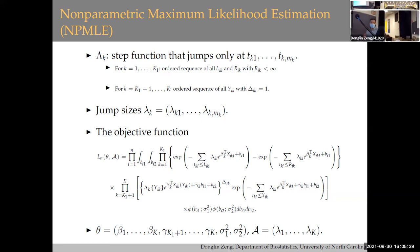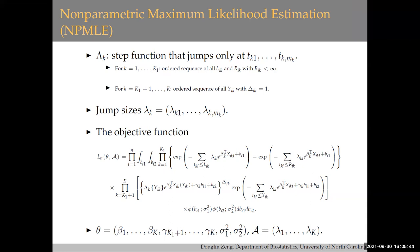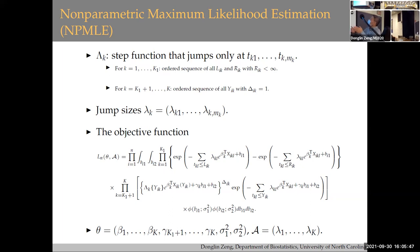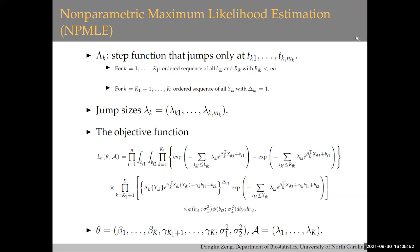Regarding the asymptotic framework for NPMLE: yes, we model jump sizes at distinct failure time points, so the number of parameters increases with sample size. I'll address the asymptotic framework when I talk about semi-parametrics. The key point is that we focus on the cumulative baseline function rather than individual jump sizes for inference purposes.